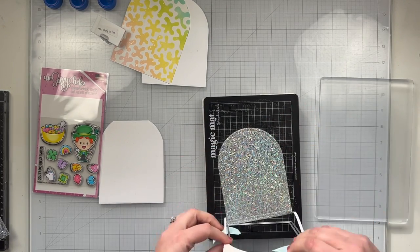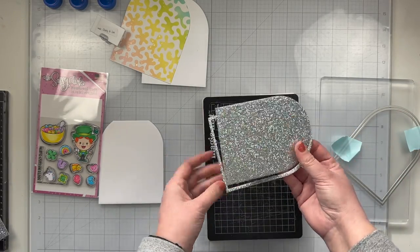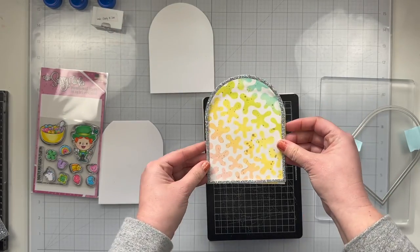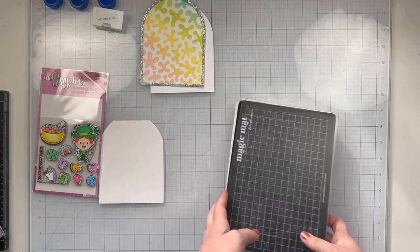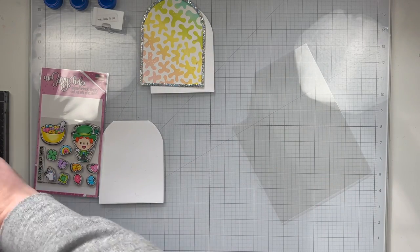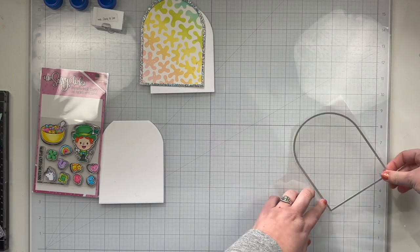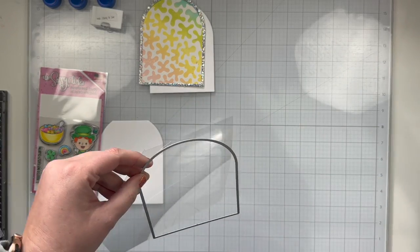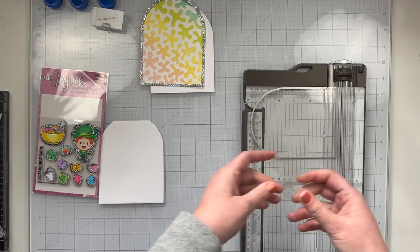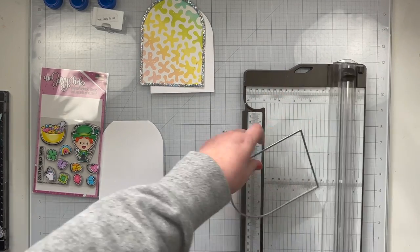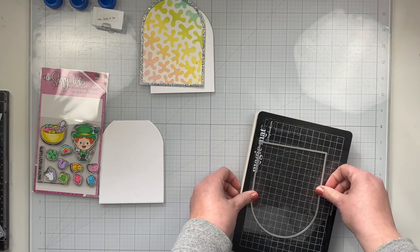So I ended up going with this super sparkly cardstock from the Your Paper Insider box 2. I hadn't used it yet and I just really wanted to use it. I think it's so fun and so shiny and because it has a silver shine to it, I thought it would go really well with those iridescent sequins that I'm going to be using. I'm also using the largest nested A2 to cut out my acetate. It doesn't cut all the way through but at least it gives me a guide to use my scissors to trim out that acetate.